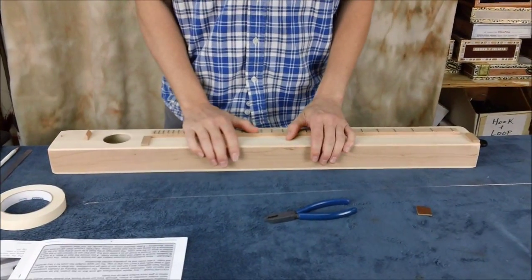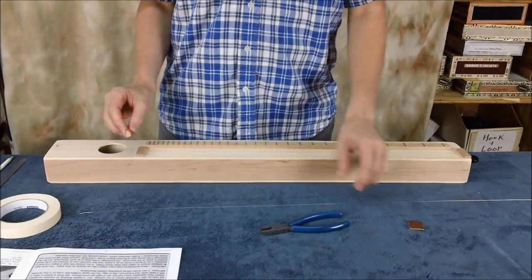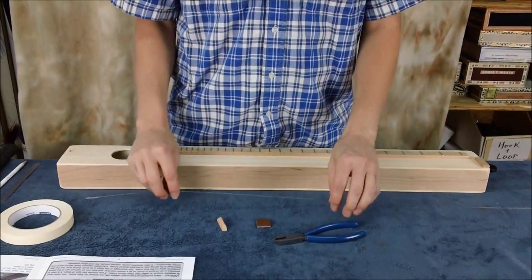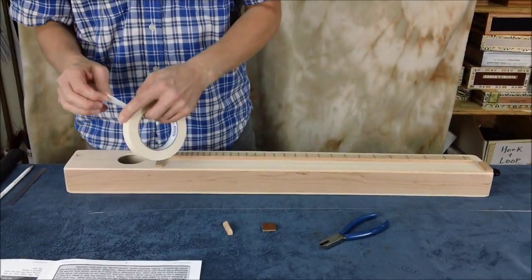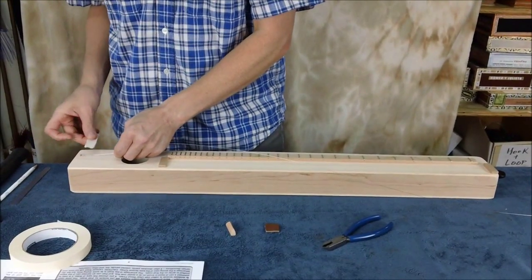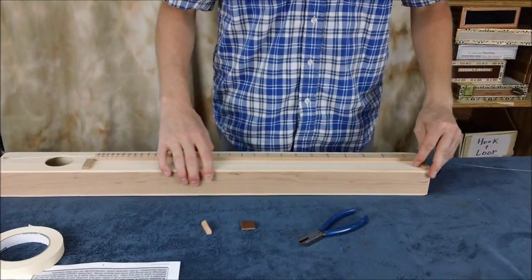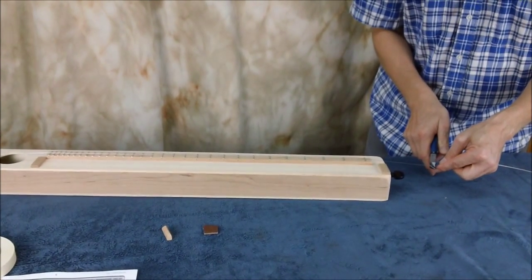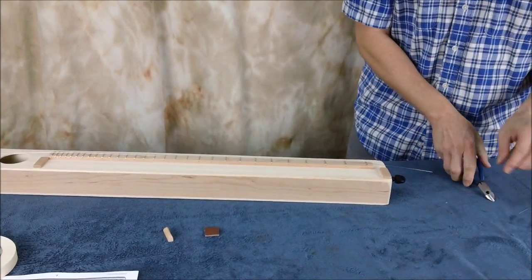Well now we're ready to install our string. Step 11 in your instructions. You want to have your bridge handy and your little scrap of leather, your string, and a wire cutter and a little masking tape. So we'll start by putting our string in place here over the tail pin and we'll tape that down. And then we're going to come down here and we're going to clip this string about three inches beyond the violin peg here.